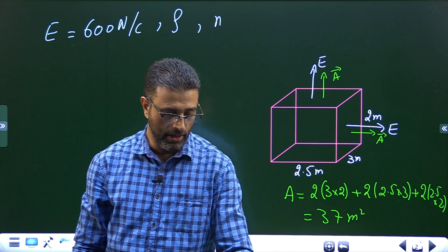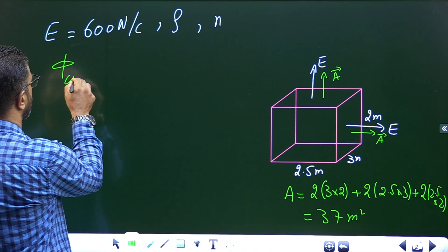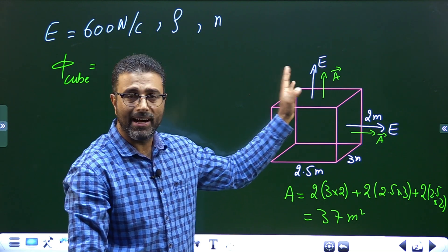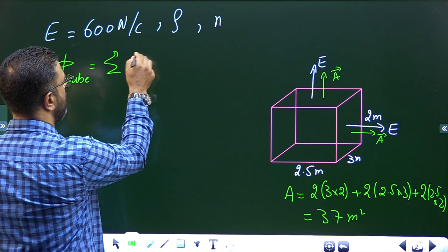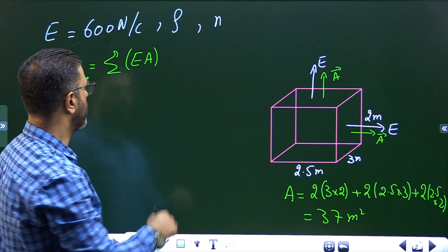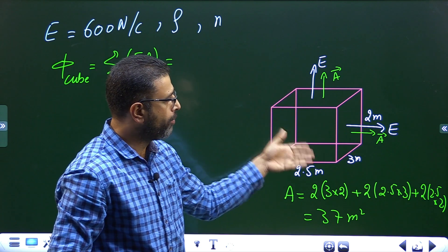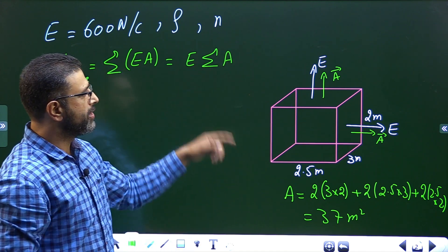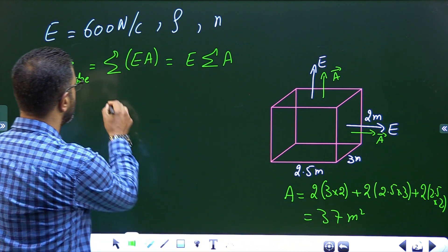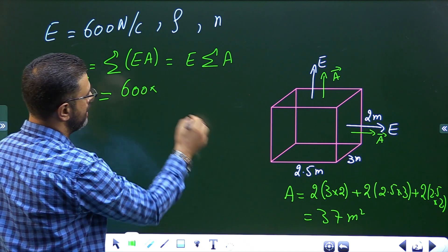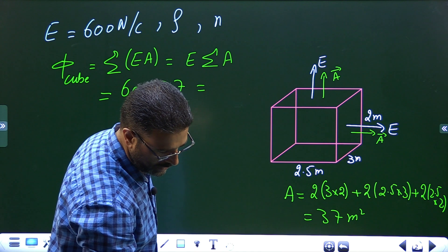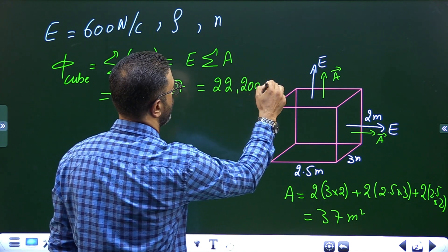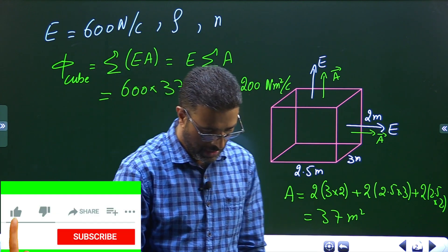The sum of area of all faces is 37 square meters. Now the flux through the cube: since for all faces the field is perpendicular and in the same direction as the area, flux is simply the summation of E·A for individual faces. Since E has the same value of 600 Newton per Coulomb everywhere, it's simply E times the total area: 600 × 37 = 22,200 Newton·meter² per Coulomb.